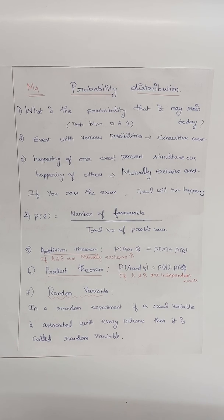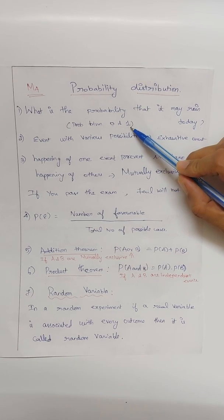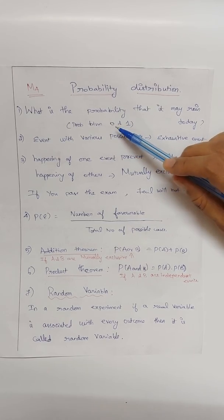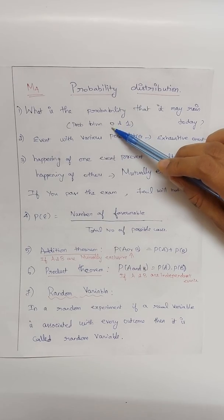If I ask you what is the probability that it may rain today, you have two answers. If it's certain it will rain, the probability is one because it's a sure event. If it's a very dry day and it's not going to rain, the probability will be zero.